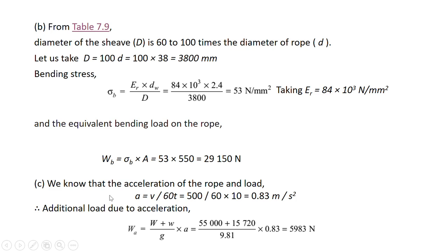Now the acceleration of the load on the rope is calculated using the standard expression. The value of V is 500 meters per minute and T is 10 seconds, so the value of acceleration A comes out to be 0.83 m/s². The additional load due to acceleration is (W + w) / g × A. Putting in the values of A, W, and w, the load due to acceleration is 5,983 Newton.